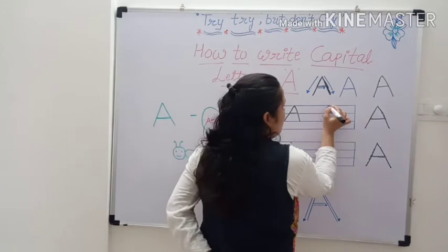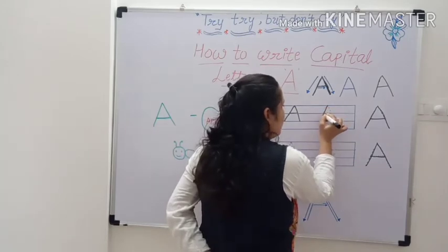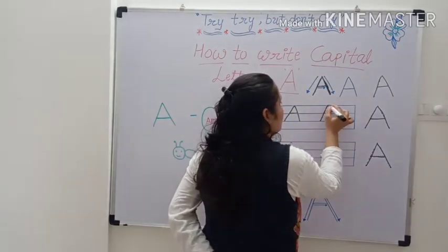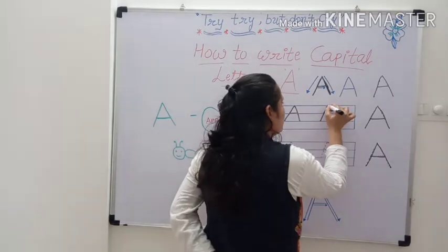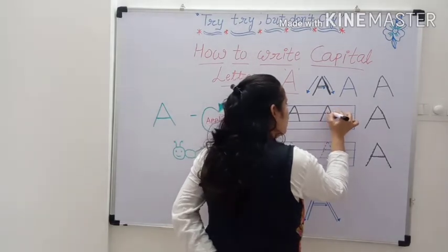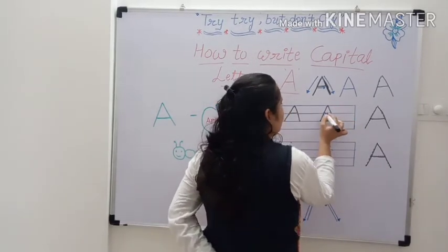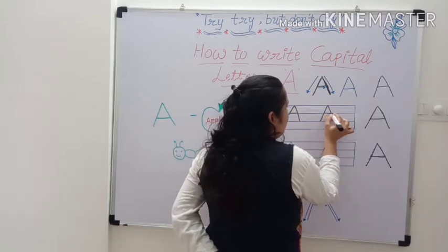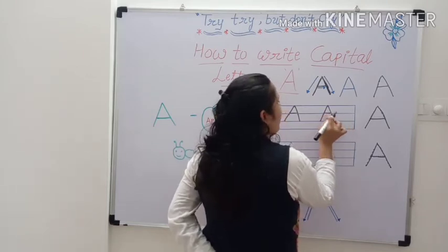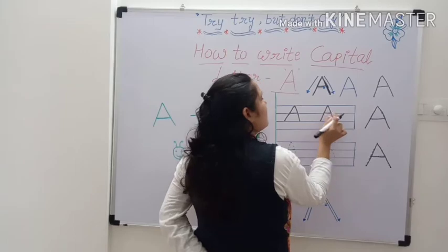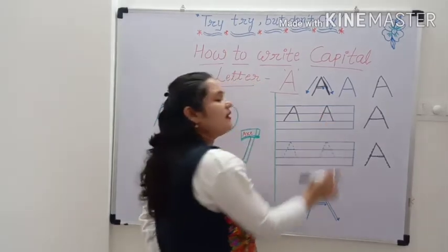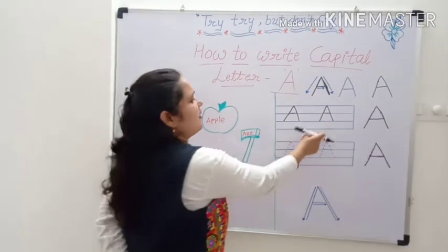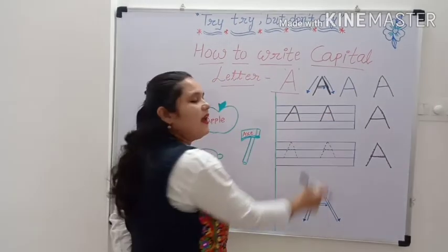Start from the top and draw a slanting line. Again go to the top. Draw another slanting line opposite. Now draw the slanting line across. A. Capital A. Capital A.